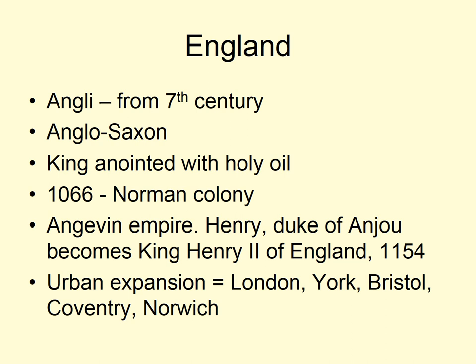In 1066 the Normans invaded from Normandy in what is now France and effectively colonized England. The Dukes of Normandy under William the Conqueror — or William the Bastard as he was known at the time — continued to hold property in France, and an empire was created encompassing both England and Normandy. This eventually expanded through marriage alliances to become what we call the Angevin Empire, when Henry Duke of Anjou became King Henry II of England in 1154.